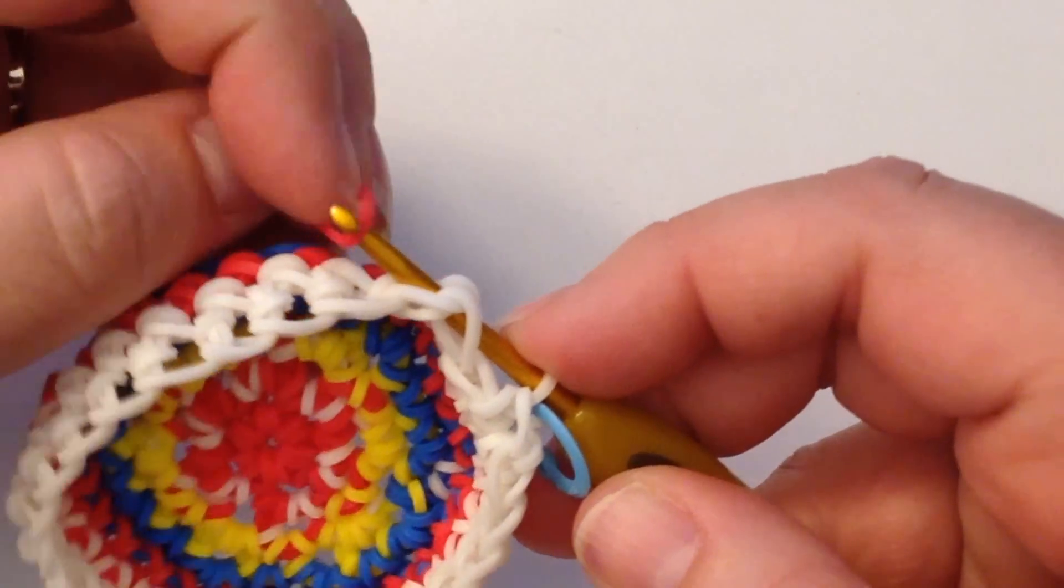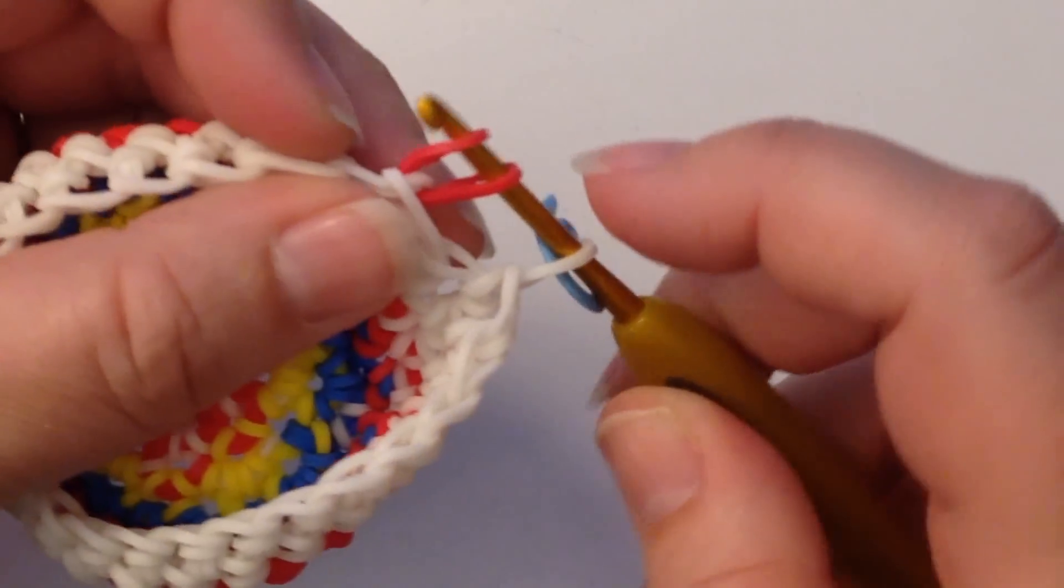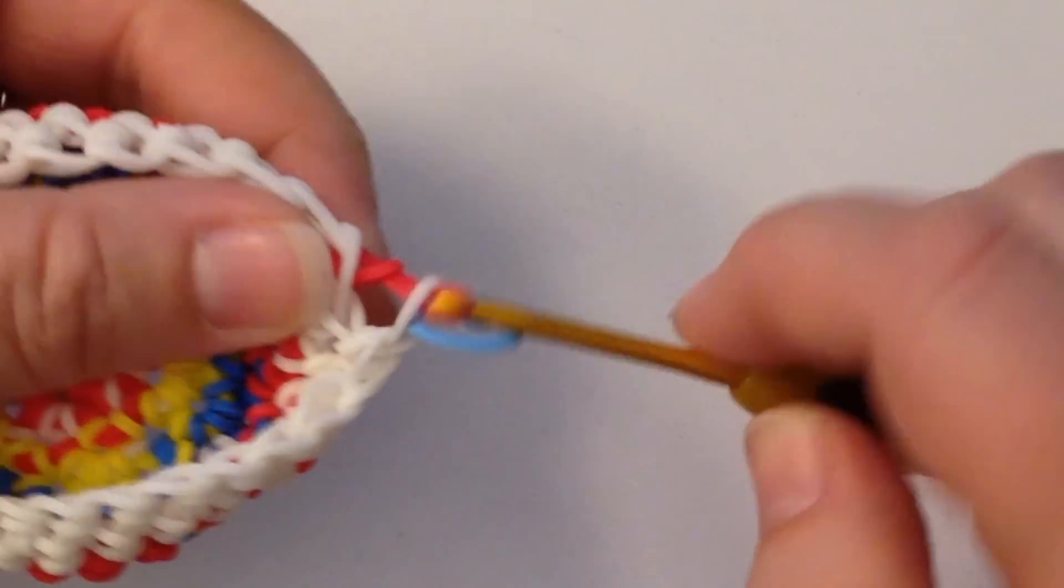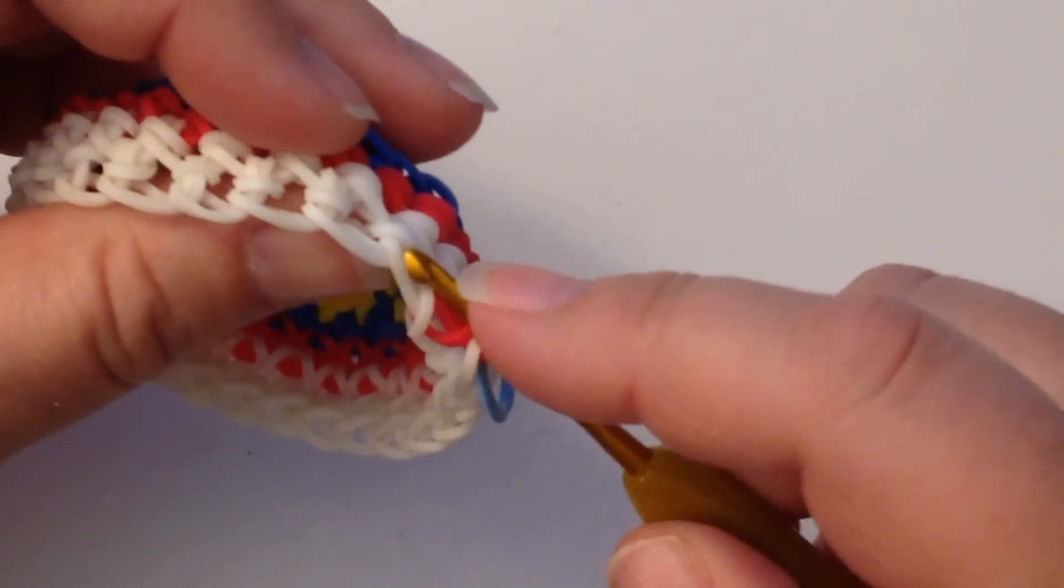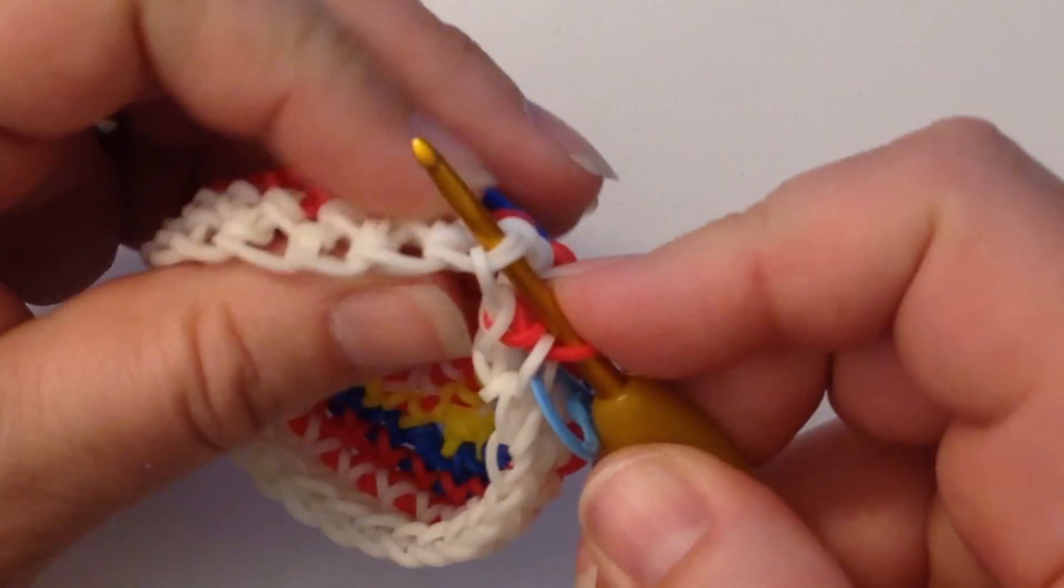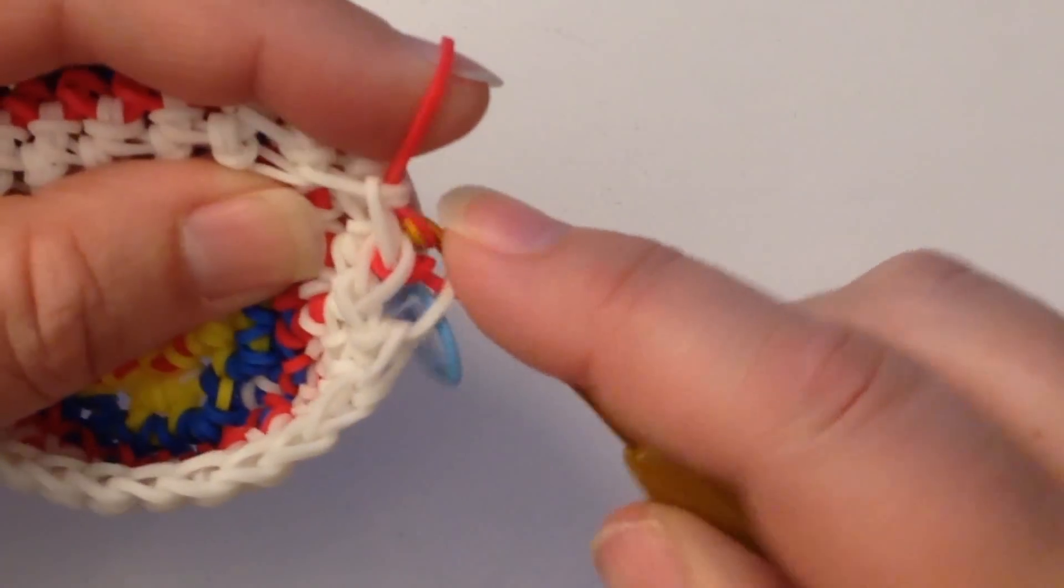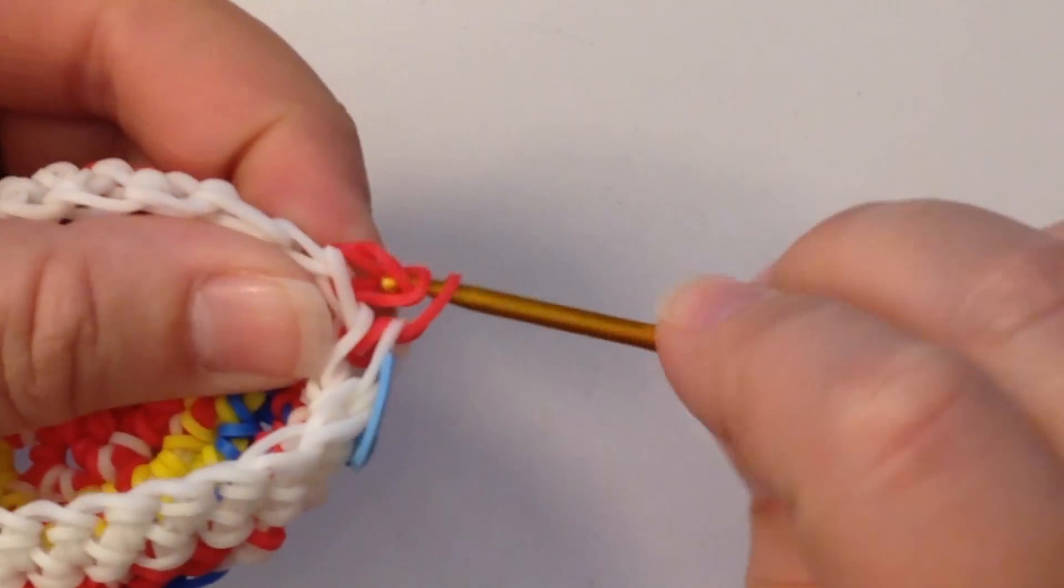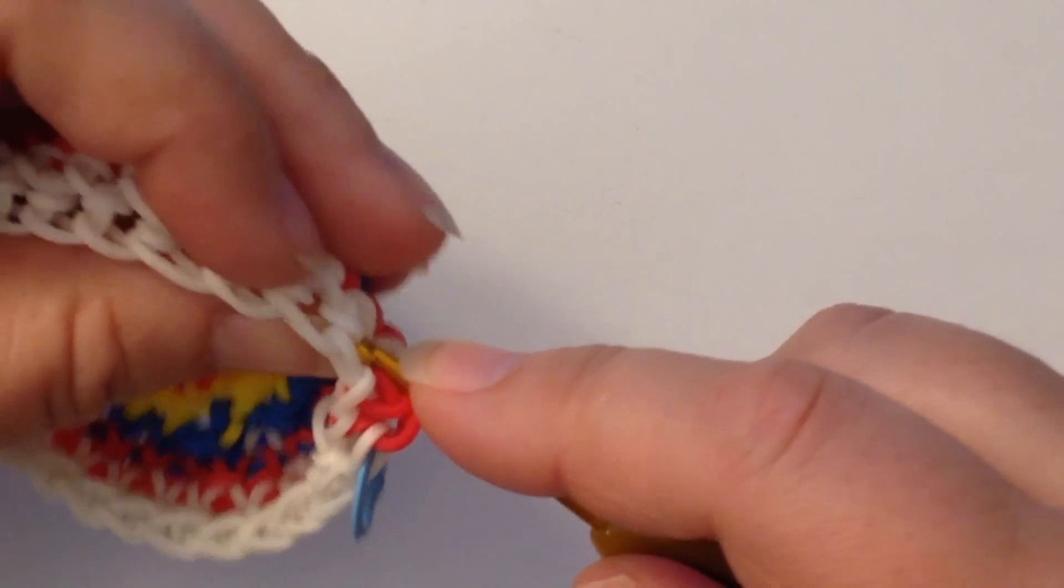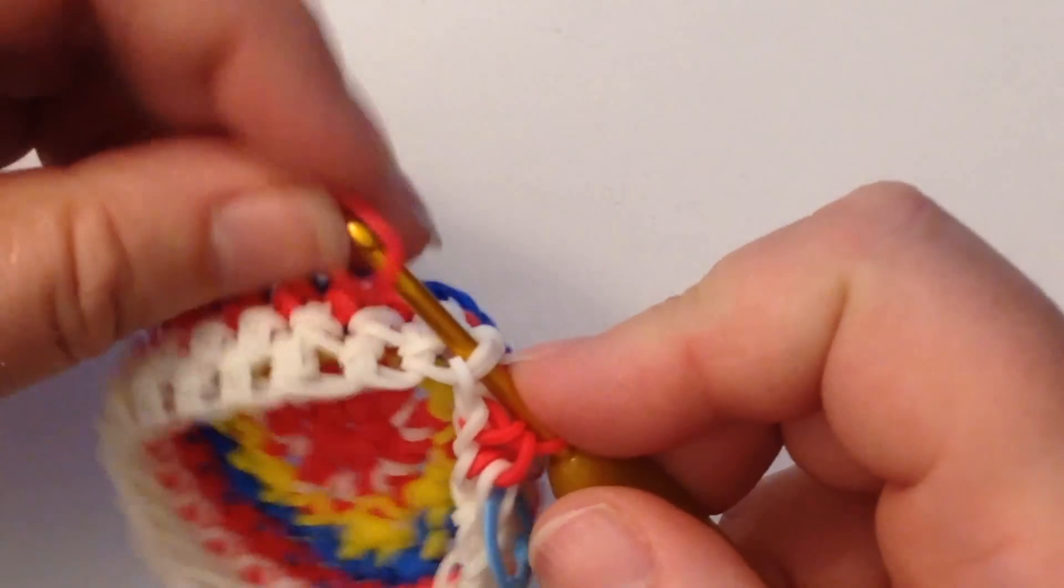We'll be doing a single crochet in this instance. And again, push through, pull your band back. So this way we're working in the back post.